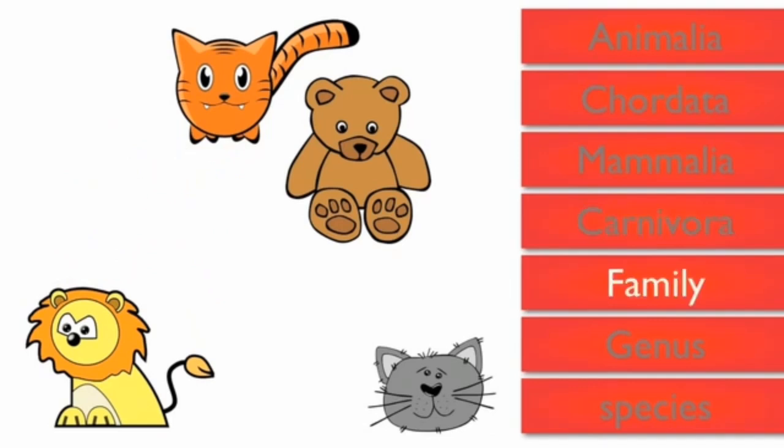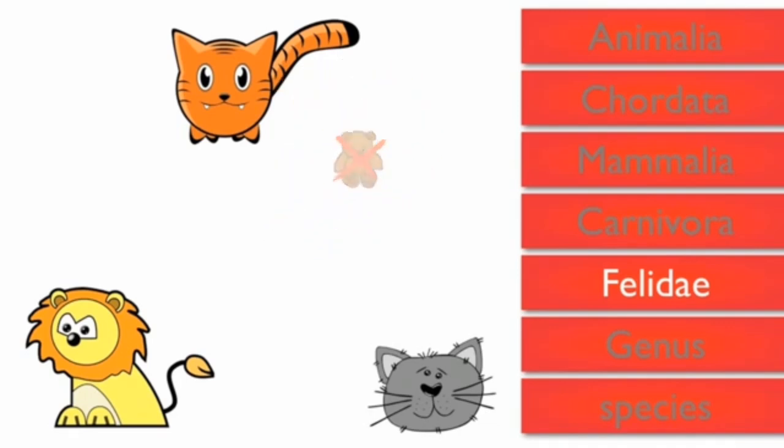The next level is family. The family of lion is felidae, it means the animal that can roar, so the bear is eliminated.